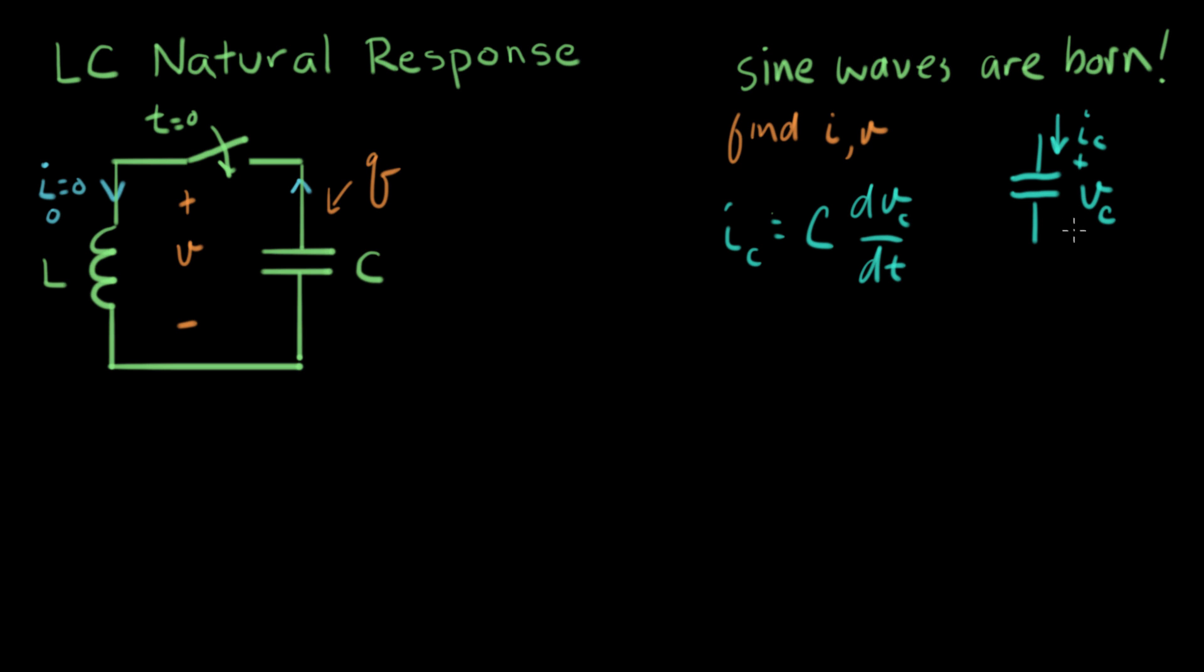negative sign at the bottom. So V_C and V are the same. But I, we have to be careful. I is in the opposite direction of the current that I picked for our independent variable. So that's upside down. So I, there's a negative sign we get to flip here, equals negative C dV dt.